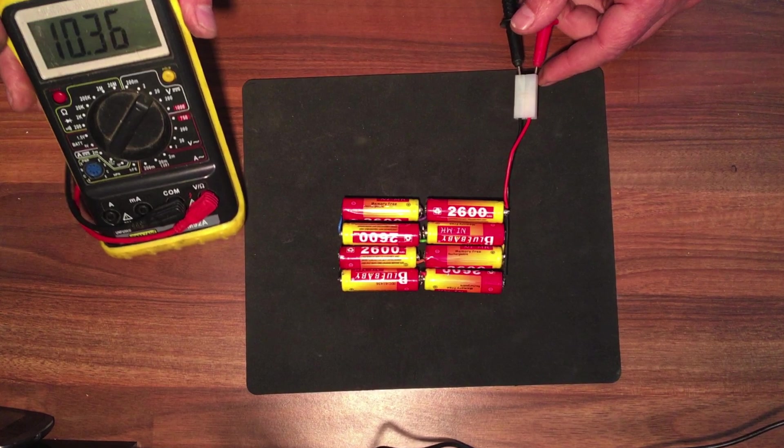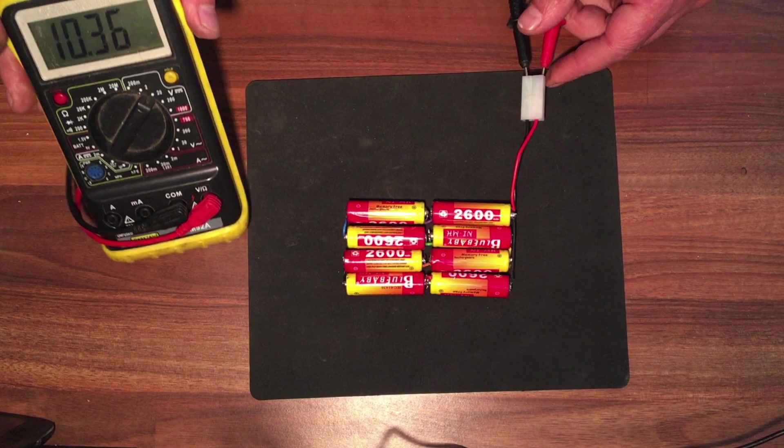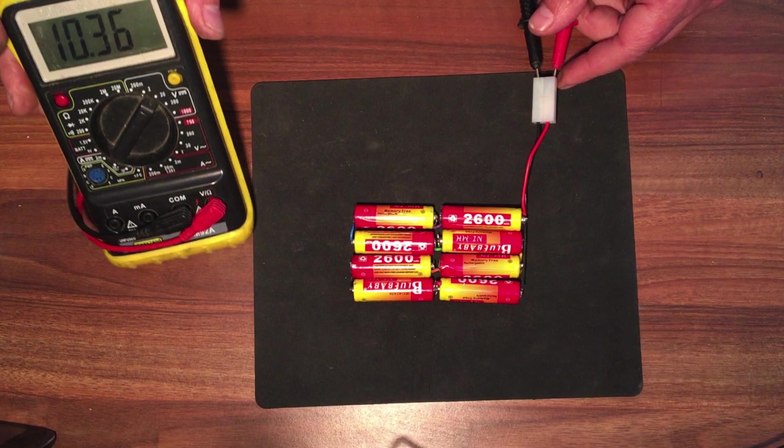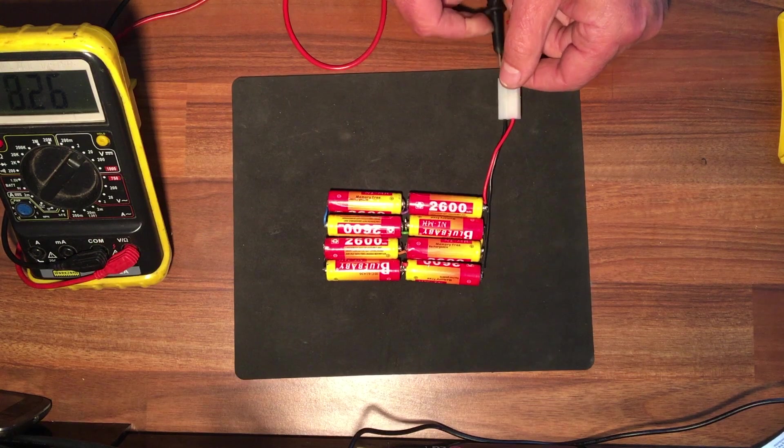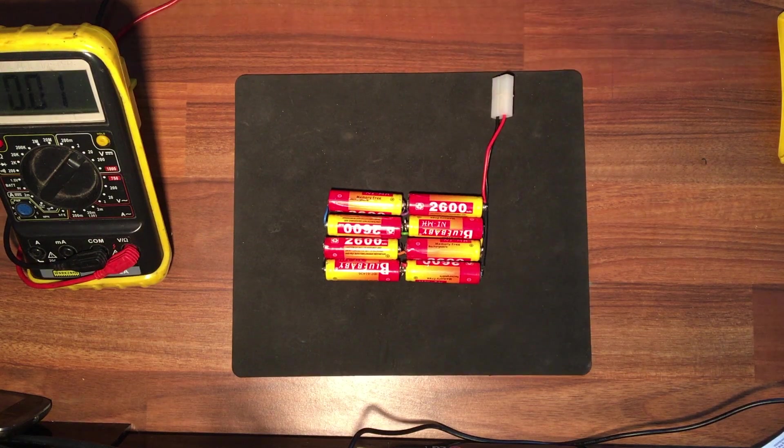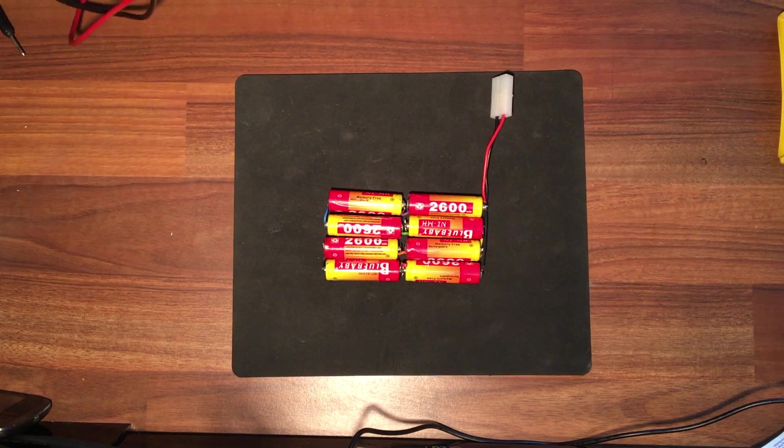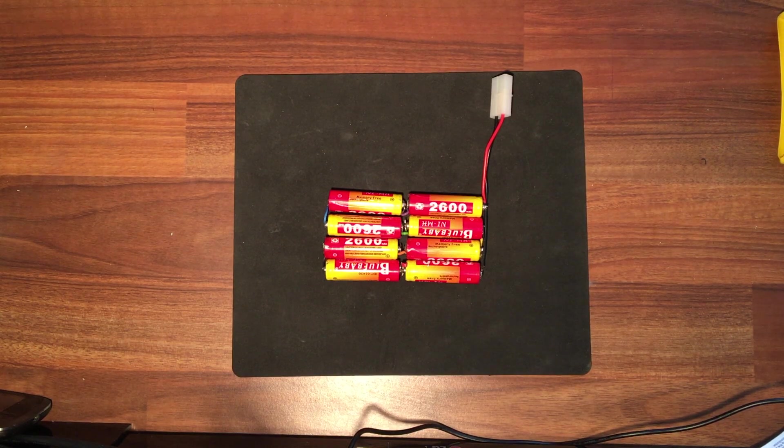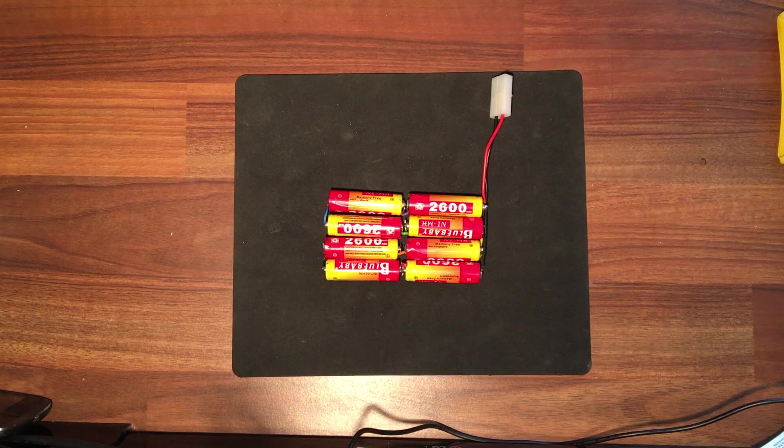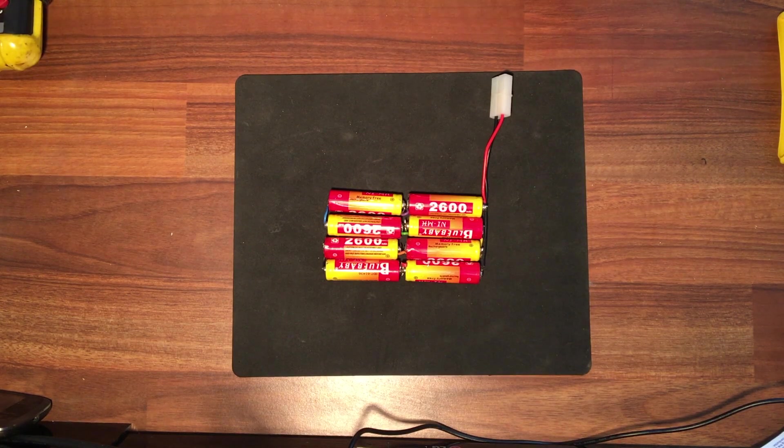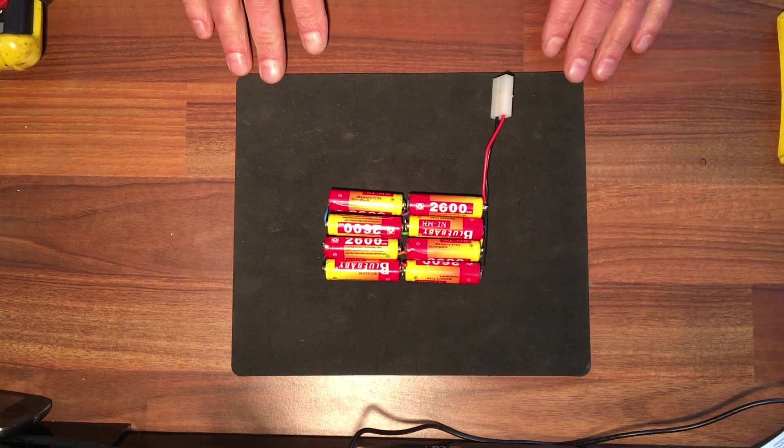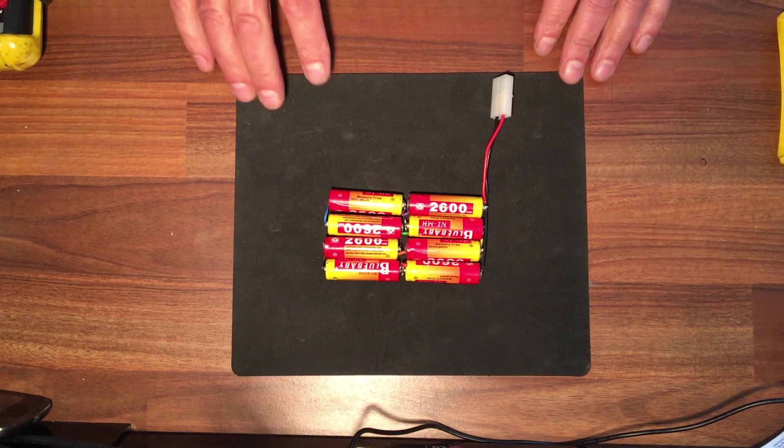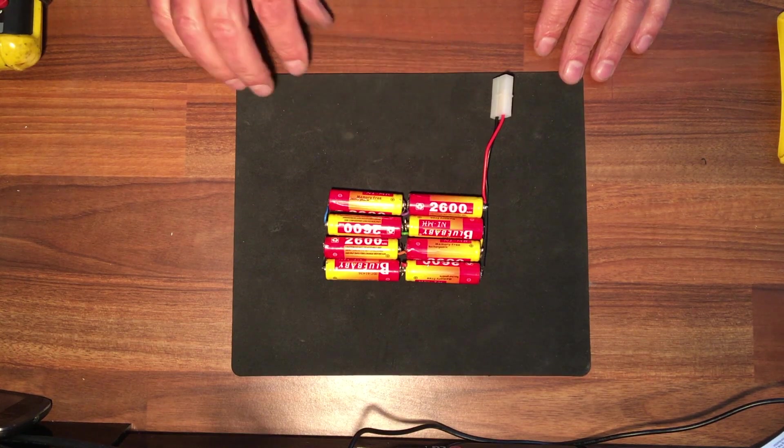And there you can see we're getting 10.36, 10.37 volts. Now I had pre-charged these prior to doing any work so we have a full charge there. So that's good. Now it's a good idea as you solder each one to make sure that you have the current passing and you'll see them adding up 1.2, 2.4, etc. So now we have in excess of 9.6 volts and 2600 milliamps.